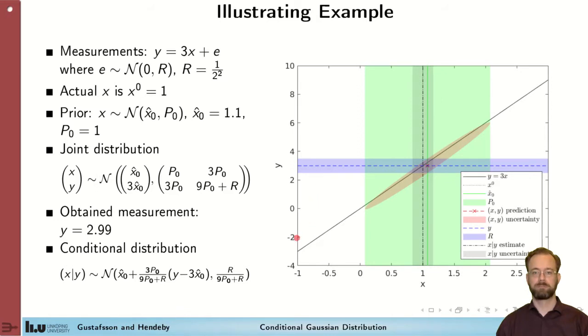Given by this expression here and illustrated by this dark area here that represent uncertainty and the new mean. We see that the mean is now much closer to the true one and that uncertainty has dropped quite a lot.